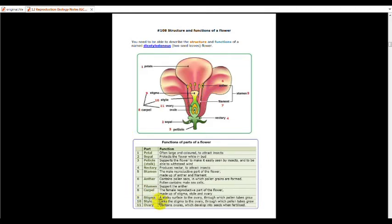The style links the stigma to the ovary. Style links the stigma to the ovary through which the pollen tubes grow. So, about the pollen tubes, we will learn later in the process of pollination.